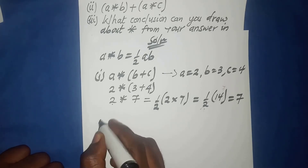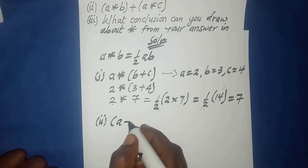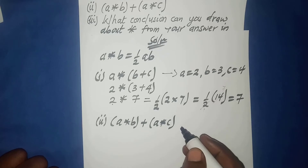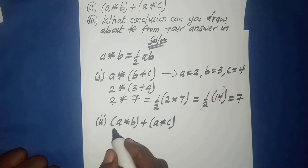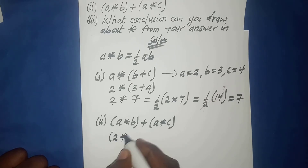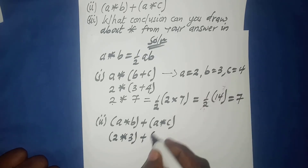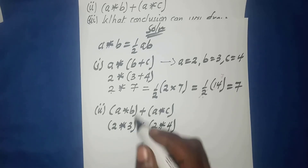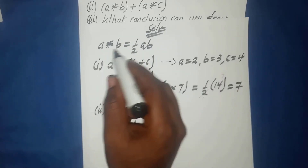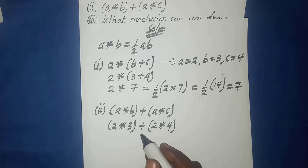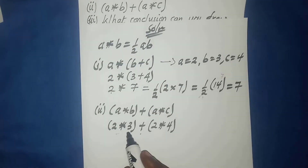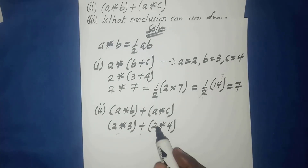Now for part (ii), we evaluate a star b plus a star c. Substituting: two star three plus two star four. We evaluate each group separately using the defined operation. In the first group a equals two, b equals three; in the second group a equals two, b equals four.